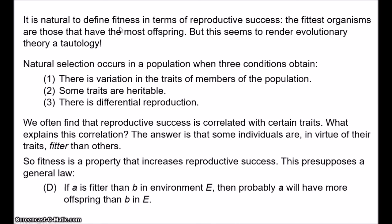This theory presupposes a general law which Robert Brandon calls D. D says that if A is fitter than B in environment E, then probably A will have more offspring than B in E. More technically, we'd want to say it will have a higher number of fertile offspring that survive to sexual maturity, but we'll keep the simple formulation. You might want to write this down because we're going to be referring back to this law D throughout this video.